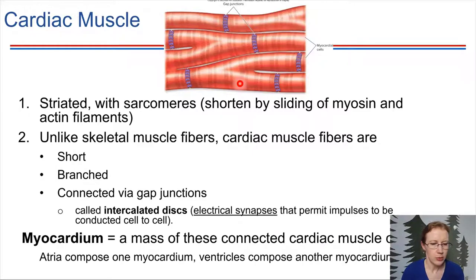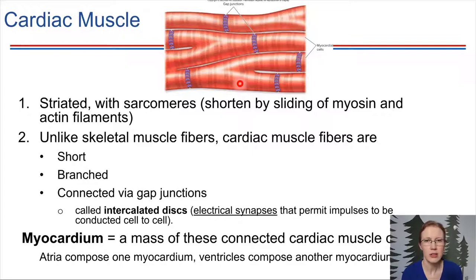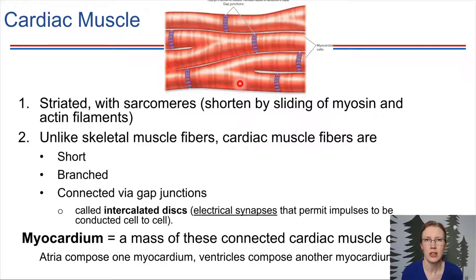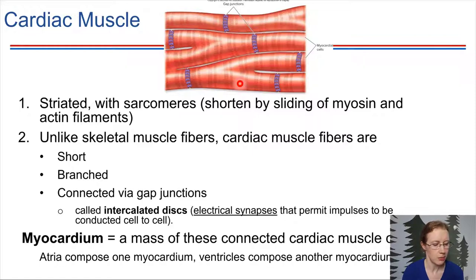When we talk about the heart, we'll revisit it in more detail in chapter 13. We often refer to the myocardium, which refers to the muscle as a whole. The heart has two separate muscle units: the atria, the upper chambers, which tend to contract as one unit — one myocardium — and the ventricles, the lower chambers, which separately contract in unison as another myocardium. So two myocardia make up the heart as a whole.